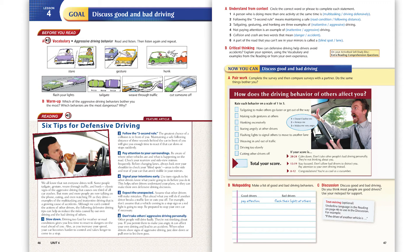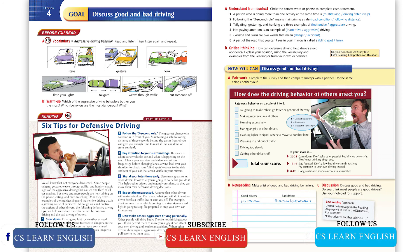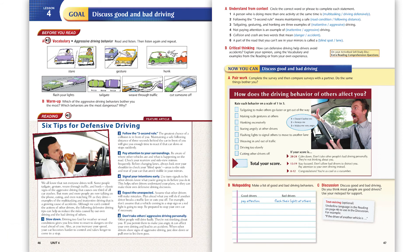Six: Don't take others' aggressive driving personally. Other people will drive badly — they're not thinking about you. If you permit them to make you angry, it can affect your own driving and lead to an accident. When other drivers show signs of aggressive driving, just slow down or pull over to let them pass.